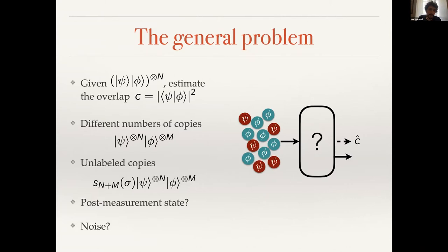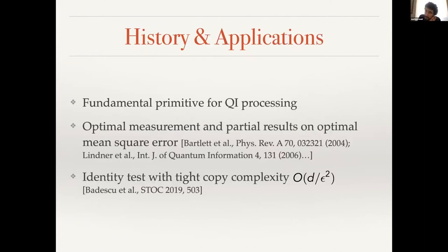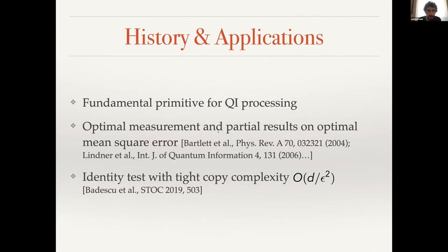We also consider the case where the pure states are degraded by depolarizing noise before the estimation. This is a fundamental primitive for quantum information processing, studied a lot. In particular, in the early 2000s, people found the optimal measurement in the Bayesian approach and computed some partial results on the minimum mean square error. We generalize these results in the Bayesian setting with an exact formula.